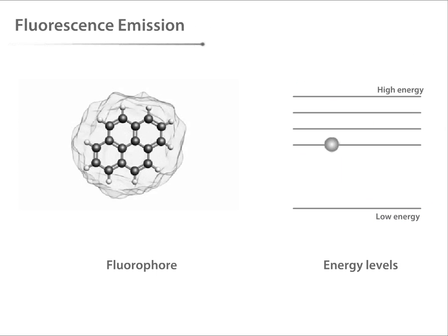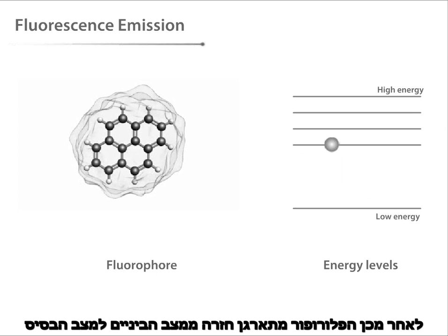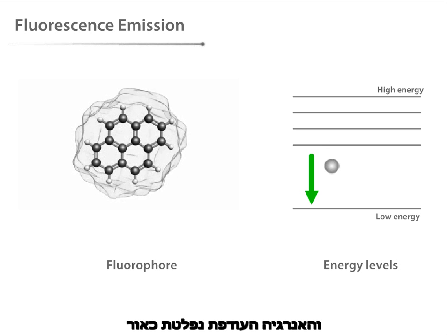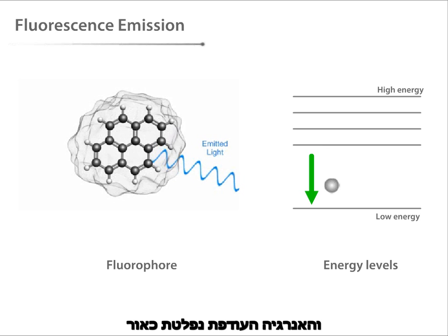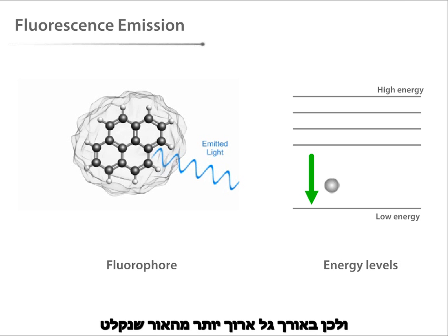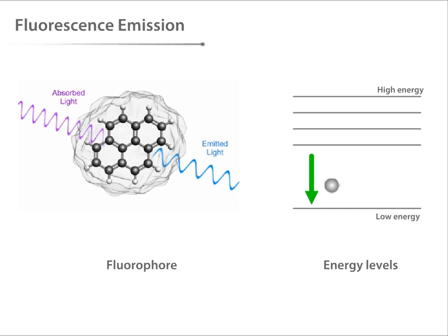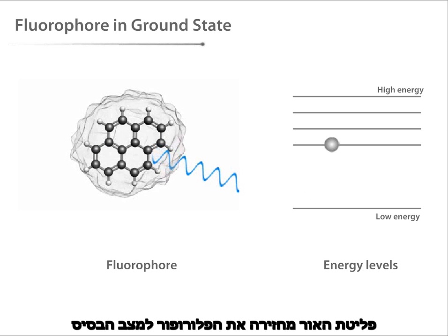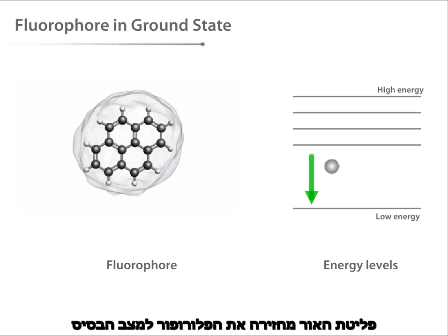Next, the fluorophore rearranges from the semi-stable excited state back to the ground state, and the excess energy is released and emitted as light. The emitted light is of lower energy, and thus longer wavelength than the absorbed light. This means that the color of the light that is emitted is different from the color of the light that has been absorbed. Emission of light returns the fluorophore to its ground state.